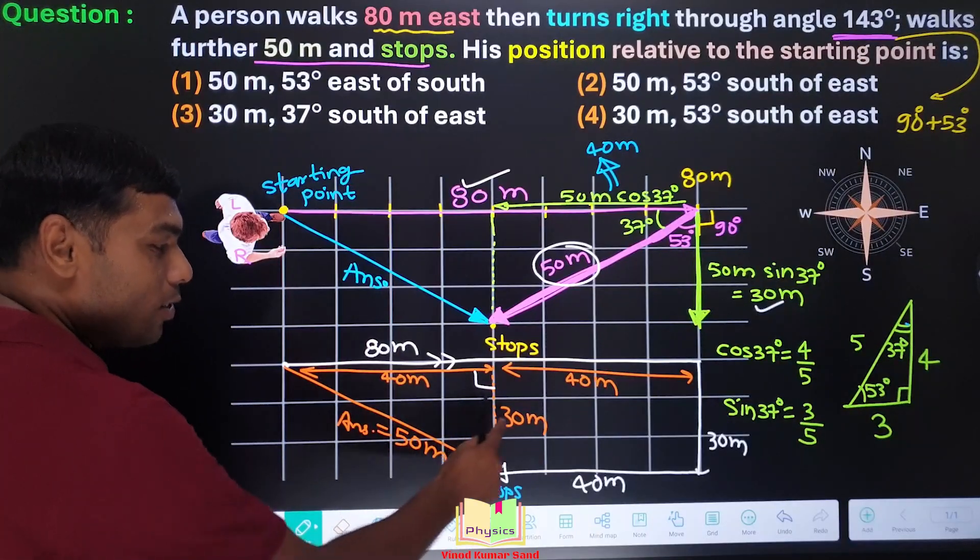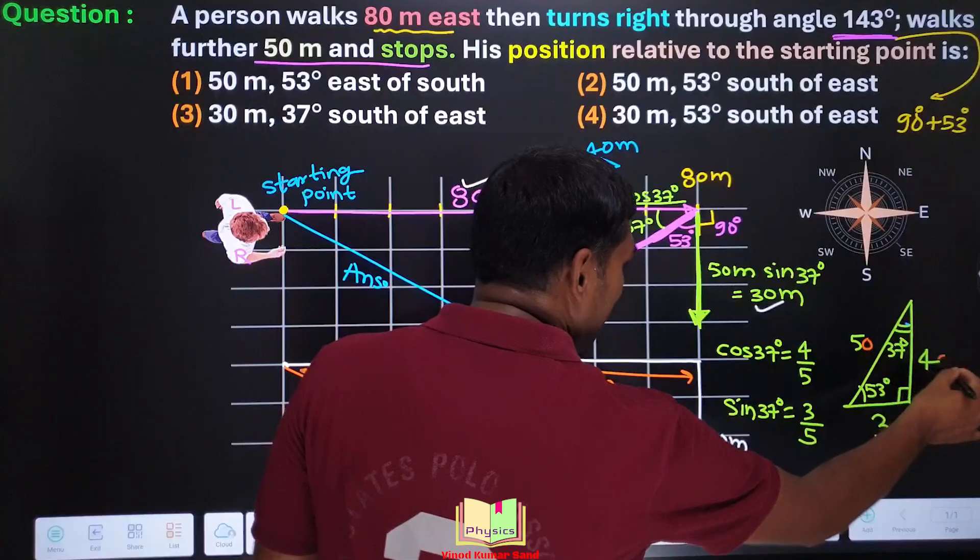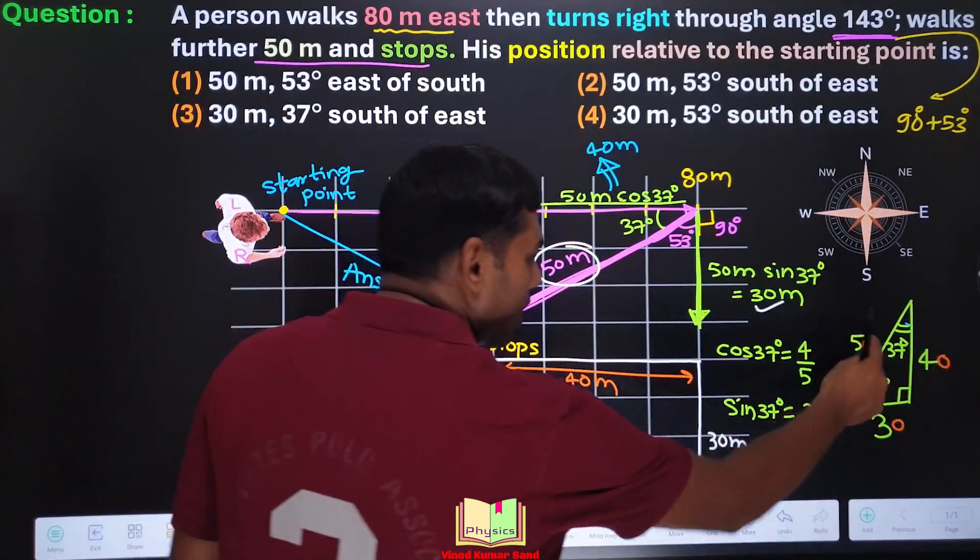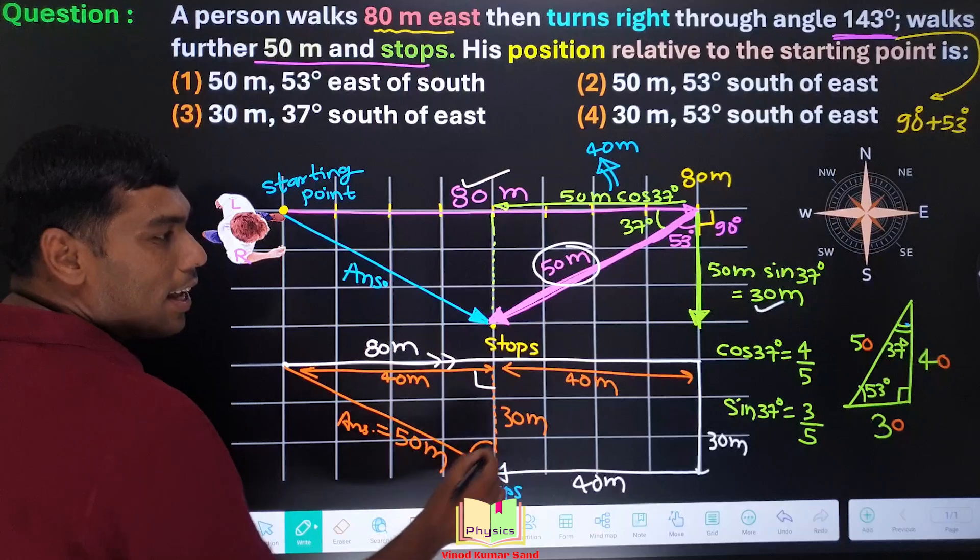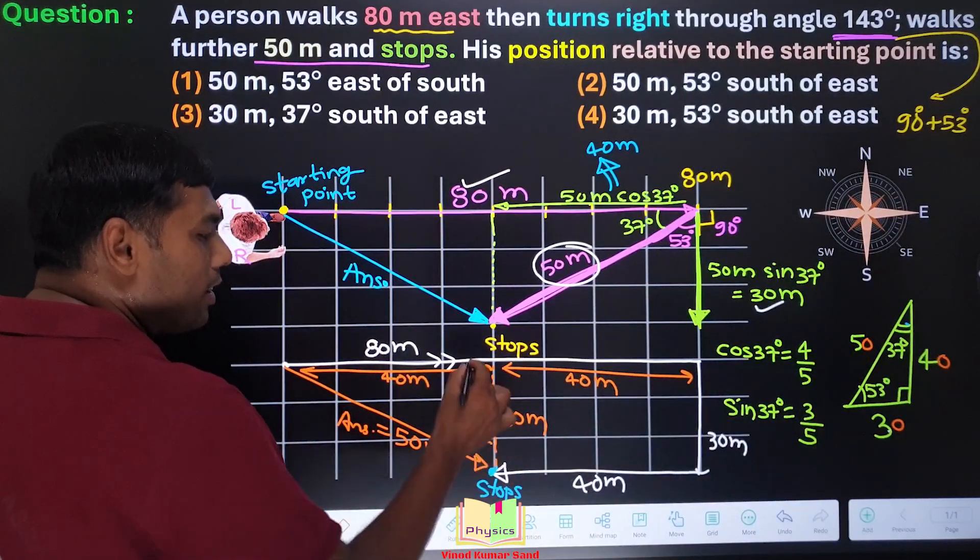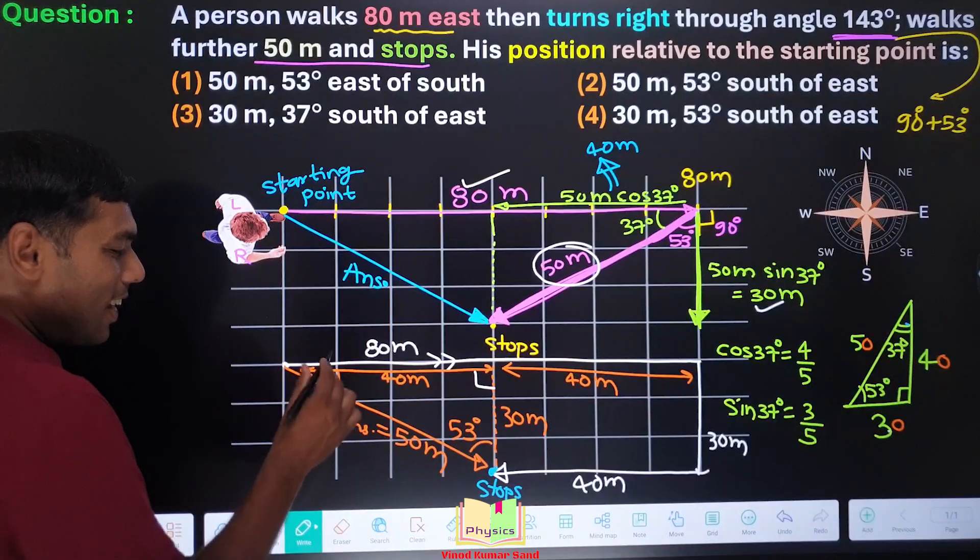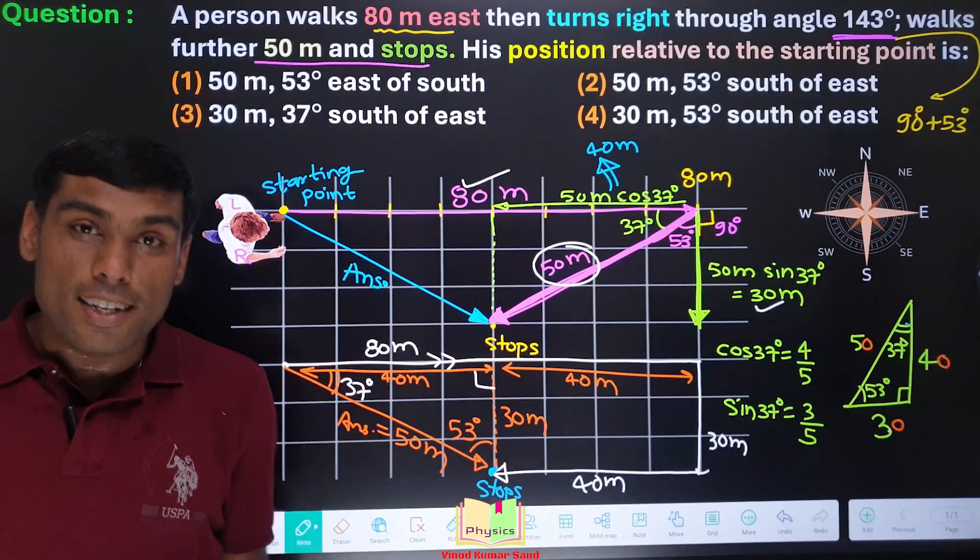Angle between the side 5 and 3 of this right triangle, 5 and 3, you can even multiply 10 here everywhere. So side 50 and 30, they will have the angle of 53 degrees. This one angle is 90 degrees, and this angle is 37 degrees.